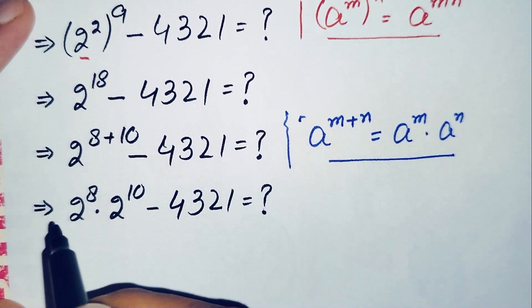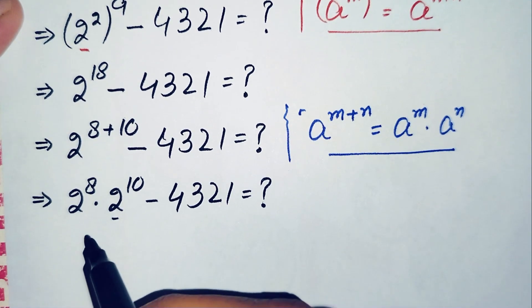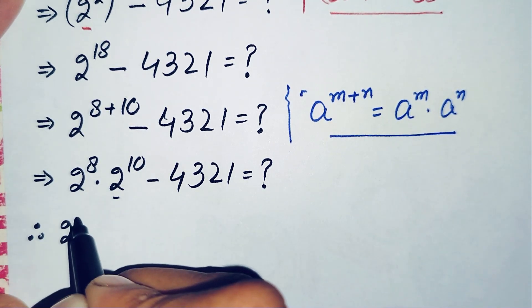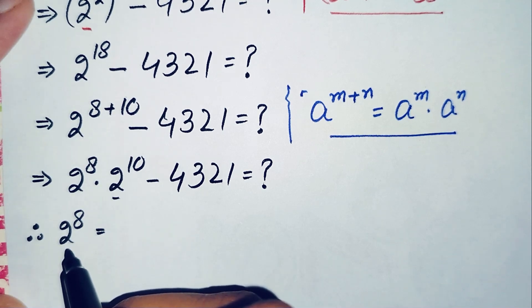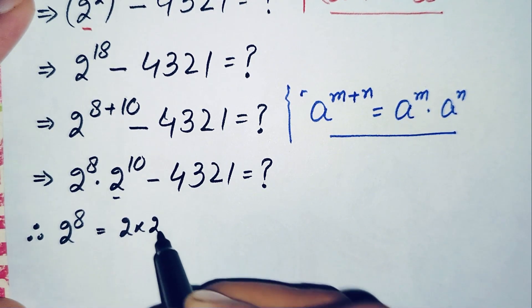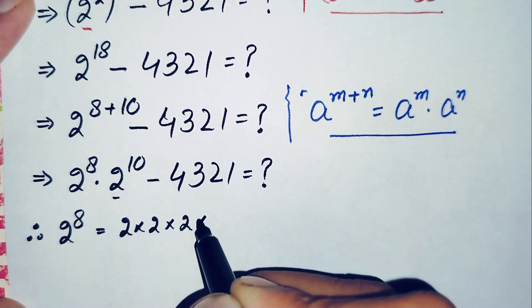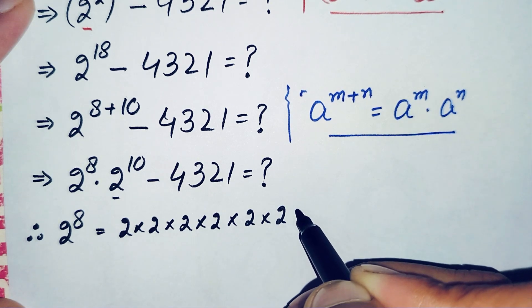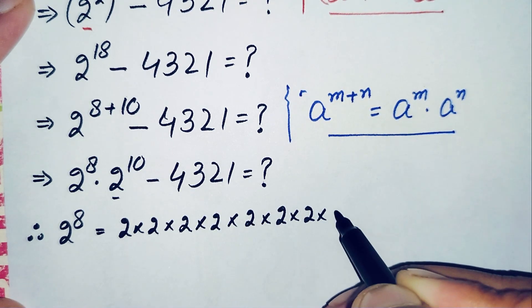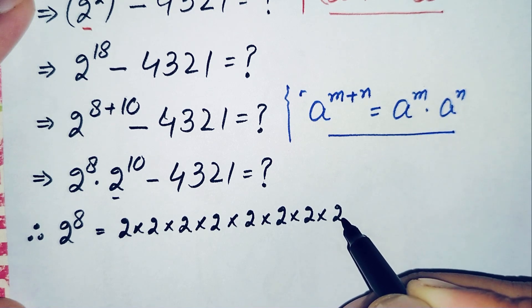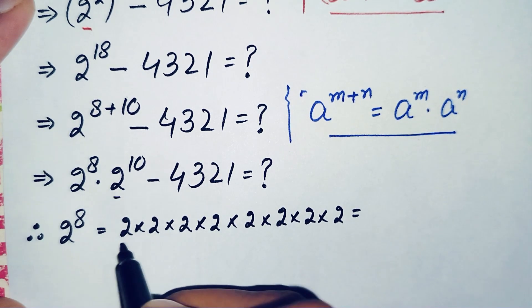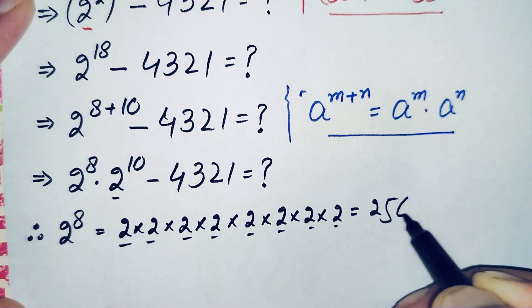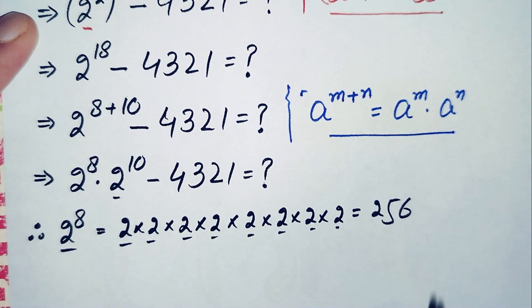Now we find the value of 2 raised to power 8 without a calculator by multiplying the base 2 eight times: 2×2=4, 4×2=8, 8×2=16, 16×2=32, 32×2=64, 64×2=128, 128×2=256. Counting all 8 multiplications, the value of 2 raised to power 8 is 256.